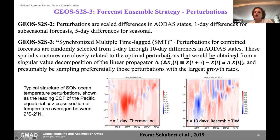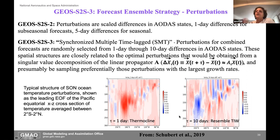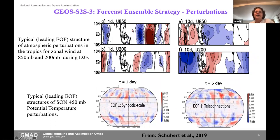We did some EOF decompositions to show what these spatial structures look like. At one-day differences, across the tropics it has the smell of something like variations in the thermocline. At 10-day differences, we're talking about something that looks like tropical instability waves in the ocean. For the atmospheric states, at one day you're looking at relatively small variations and small spatial structures; at 10 days you're looking at something that may be resembling a Madden-Julian Oscillation near the surface in terms of scales of wind variation.